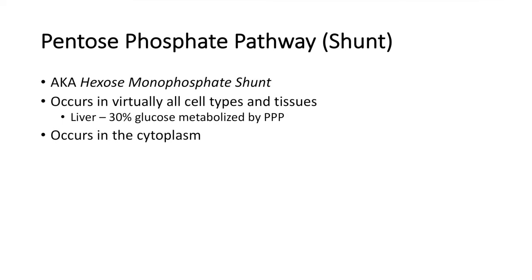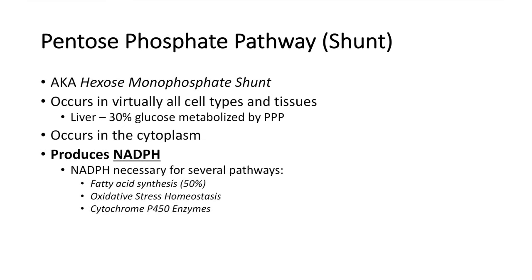This pathway occurs in the cytoplasm and produces NADPH. NADPH is very necessary for several pathways. One includes fatty acid synthesis — 50% of NADPH typically goes to fatty acid synthesis. NADPH is also necessary for oxidative stress homeostasis, which is why we see the liver and red blood cells using this pathway — to generate NADPH to protect themselves against oxidative stress. NADPH is also important for cytochrome P450 enzymes, again important in the liver.